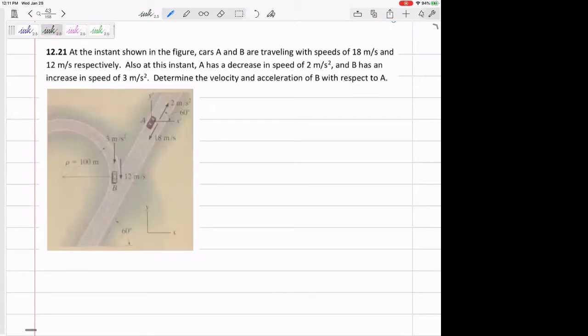Definitely a test-type problem. All right, so at the instance shown in the figure, cars A and B are traveling with speeds of 18 and 12, and they're drawn on there. They're also decreasing or increasing their speed at 2 and 3. Those are drawn on there. Determine the velocity and acceleration of B with respect to A.